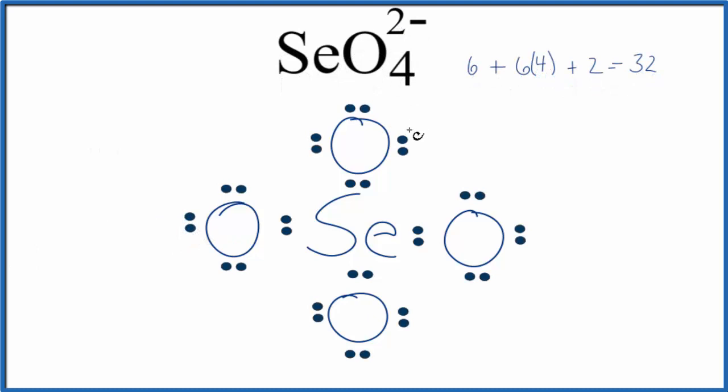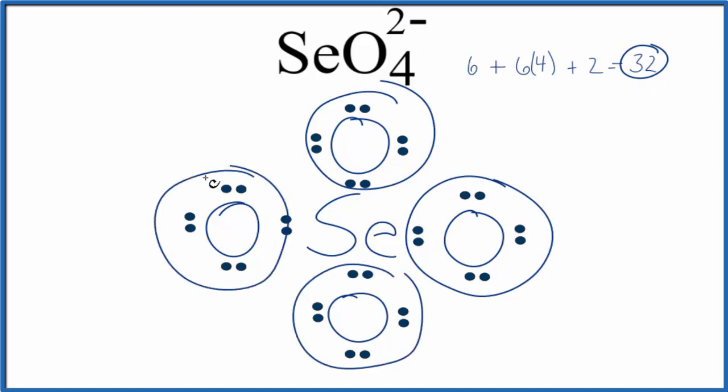At this point, we've used all 32 of our valence electrons, and it looks pretty good. Each oxygen atom has an octet, 8 valence electrons. And if we look at the central selenium atom, that has an octet. So it looks pretty good.